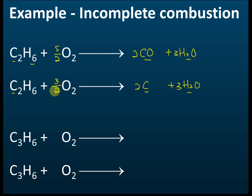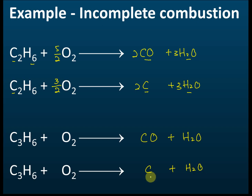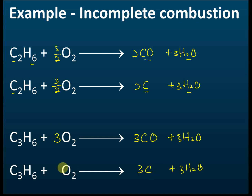For propene (C₃H₆) incomplete combustion: the first equation has carbon monoxide and water as products — three CO and three H₂O, giving six oxygens total, so 3 O₂. The second equation has carbon and water — three carbons and three H₂O, needing 3/2 O₂. Carbon exists as soot, the black smoke produced during incomplete combustion.